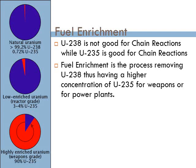Since uranium-235 is usually found in subcritical mass form, we need to perform fuel enrichment — increasing the percentage of uranium-235 relative to other isotopes. When you mine uranium, it's mostly uranium-238, which is very stable, with only tiny amounts of uranium-235. About 99% is uranium-238. We need to change it so at least 3 to 4% is uranium-235 to make it reactor grade, or critical mass.